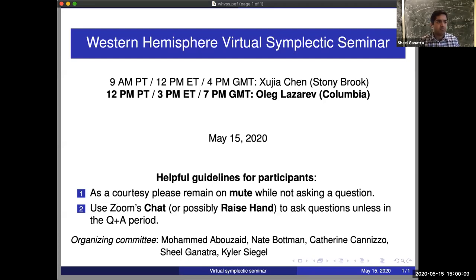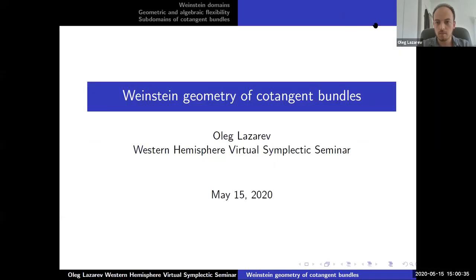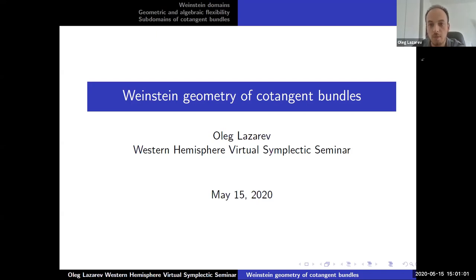It's a pleasure to have Oleg Lazareff from Colombia today for our second talk, telling us about the Weinstein geometry of cotangent bundles. I'll talk about cotangent bundles from the Weinstein point of view. First I'll give some background about Weinstein domains, then state some results. I'll talk about flexibility from both the geometric and algebraic points of view, and finally talk about how to construct some subdomains.